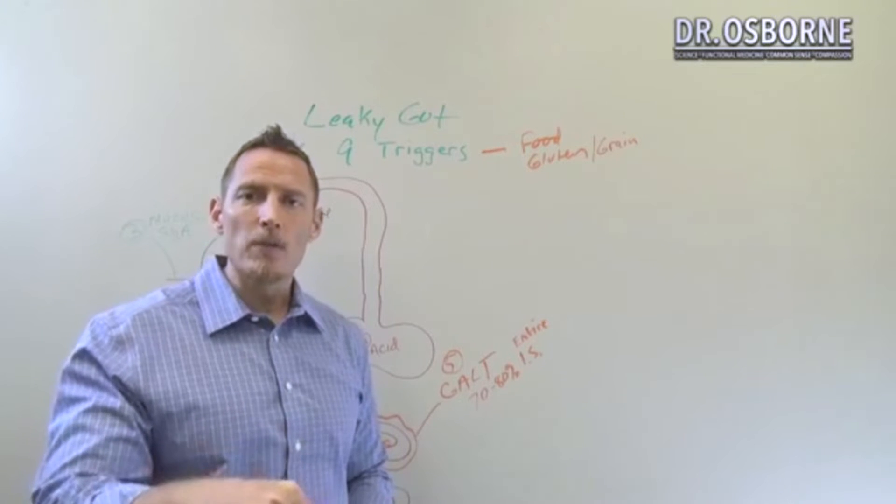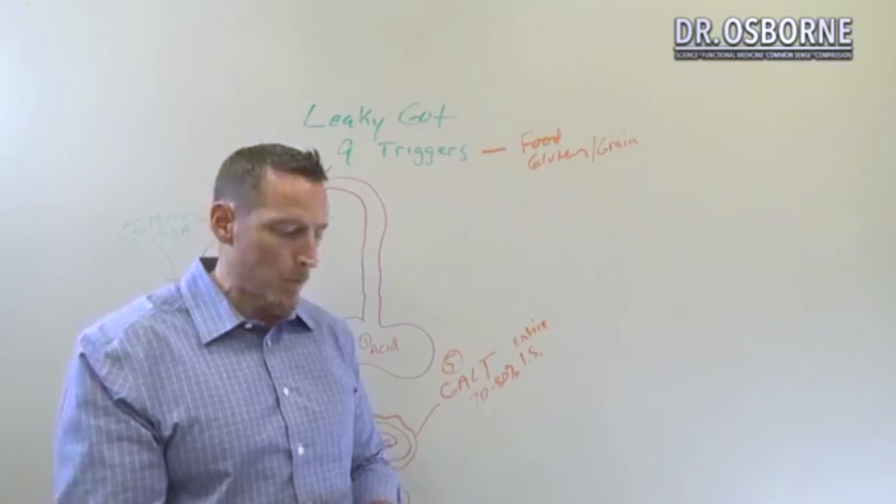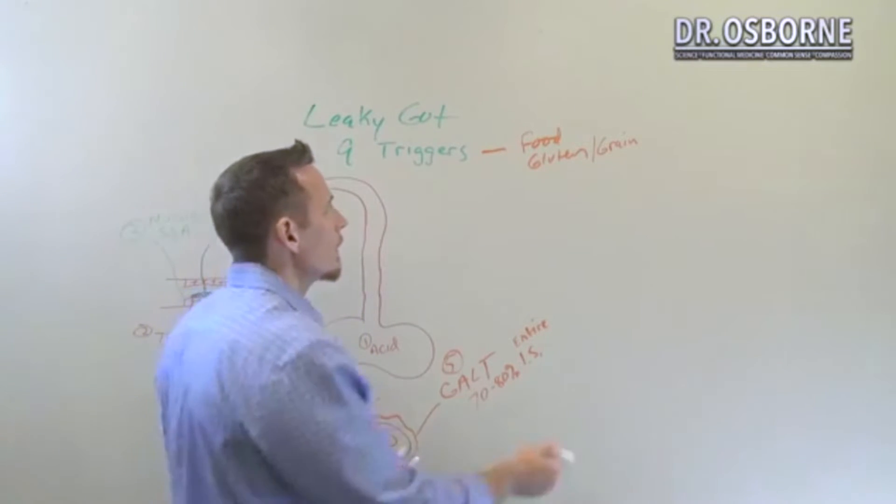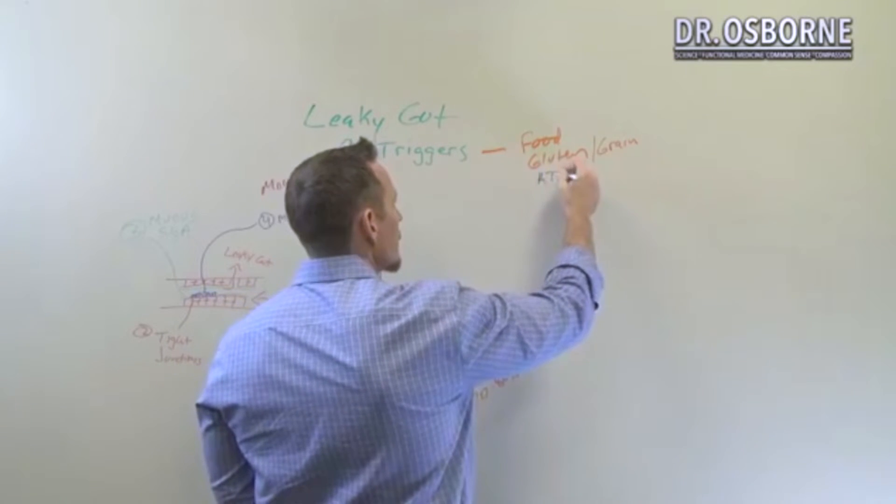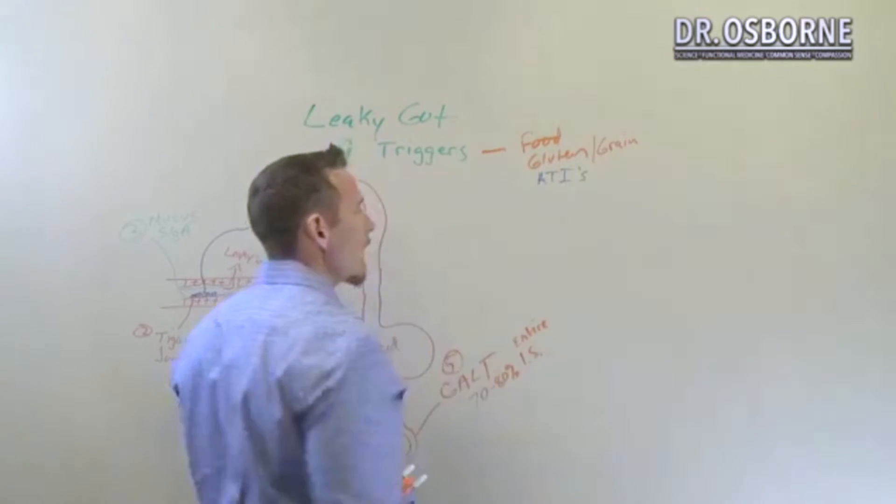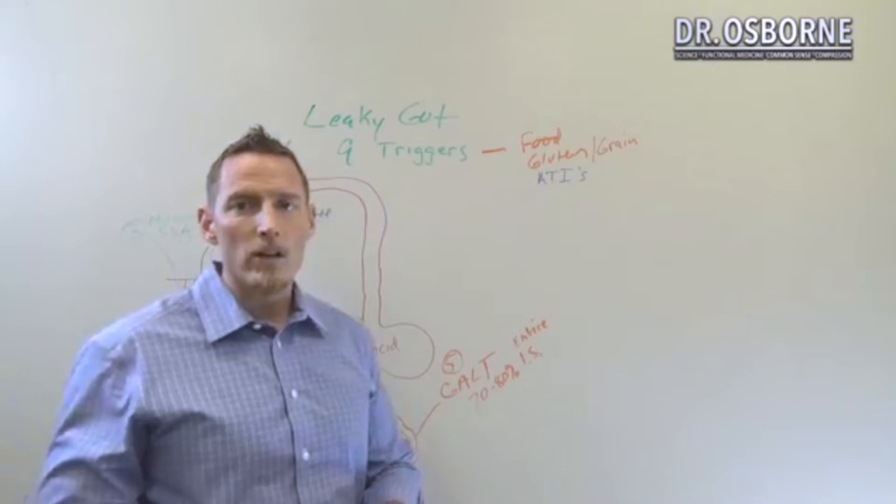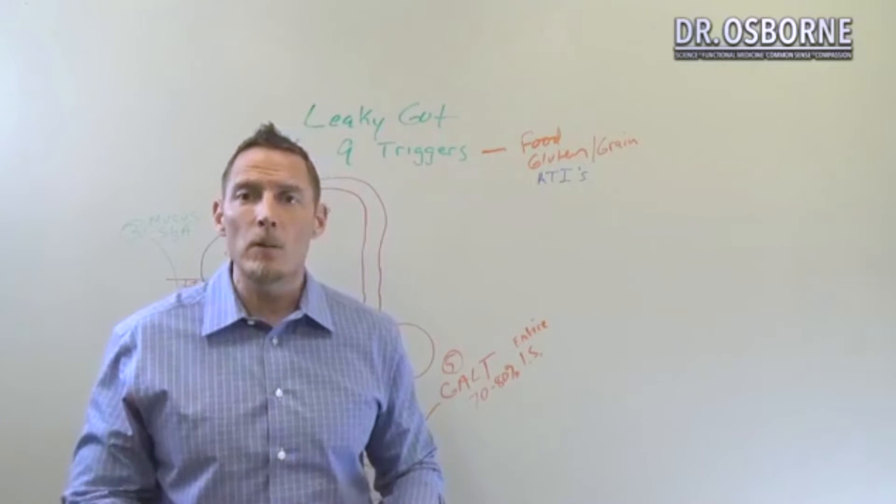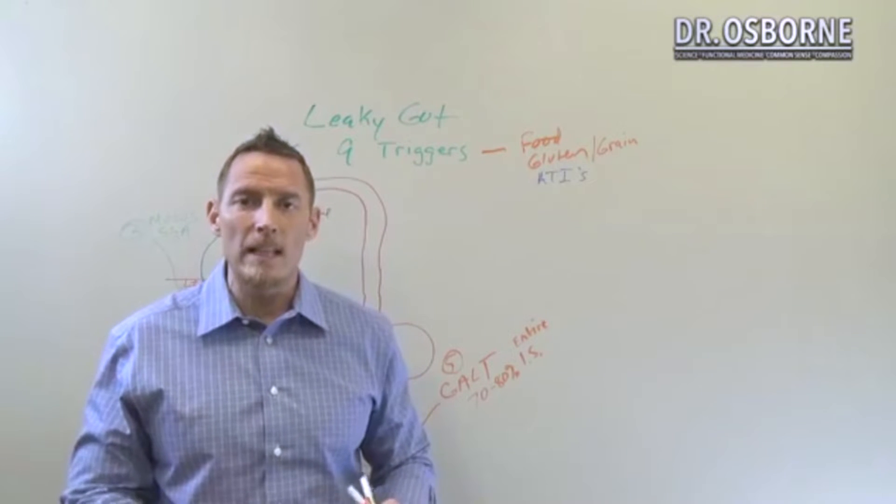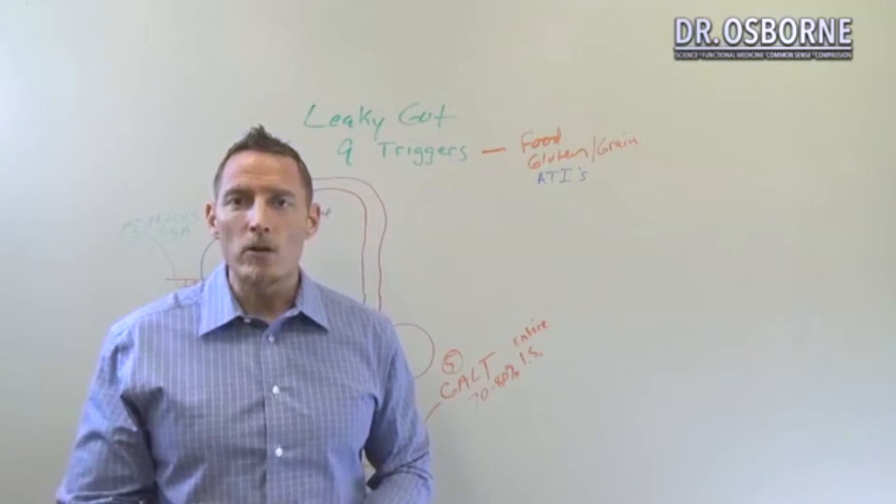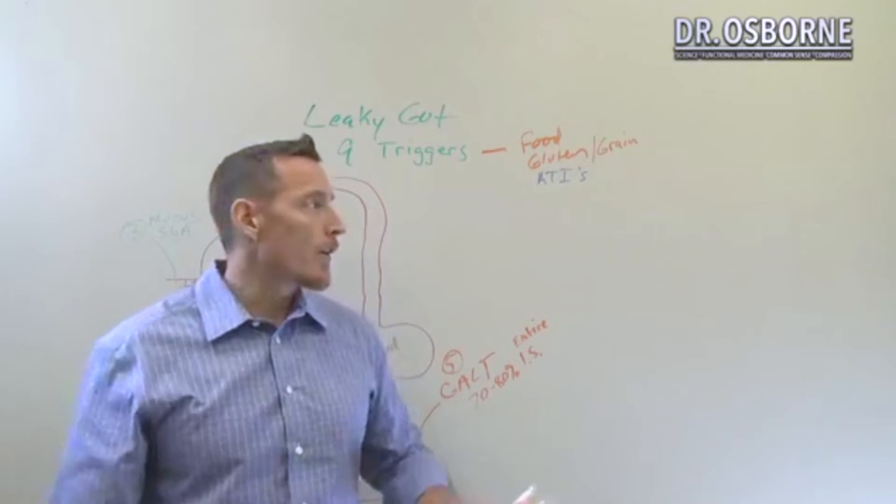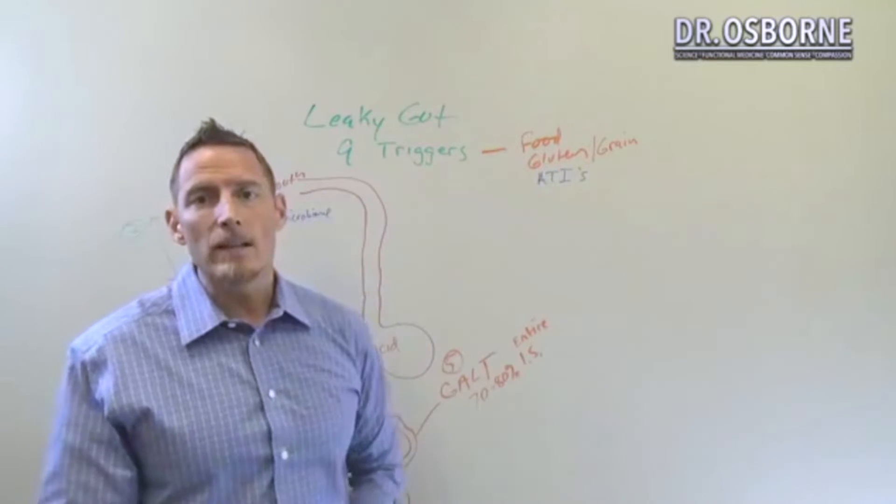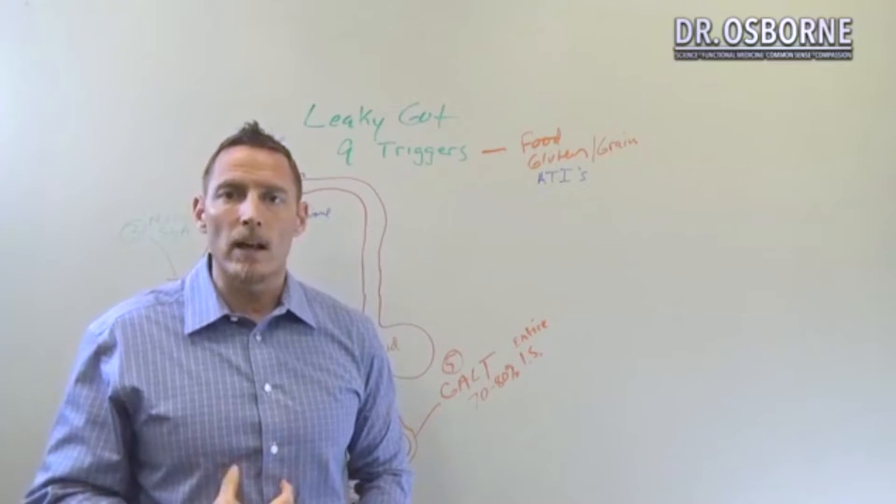One protein in particular that very few people ever talk about is a family of proteins called ATIs, amylase trypsin inhibitors. And these proteins actually have been directly shown to cause gastrointestinal inflammation and open your gut lining right up. And they have nothing to do with gluten. So if you've ever been gluten tested negative and you still feel better on a grain free diet, it very well could be because you were reacting to ATIs within the gut lining itself.